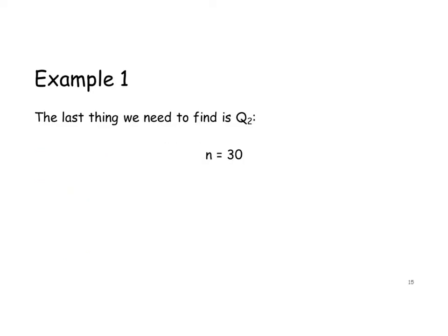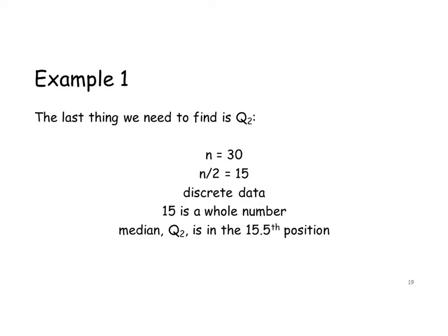The last thing we need to find is Q2, the median. So we need to know the position of the median. We know we have 30 pieces of data, so n is 30. n divided by 2 is 15. Now, remember, this is discrete data. And 15 is a whole number, so that means our median is in the position between the 15th and the 16th number — so that's the 15.5th position.